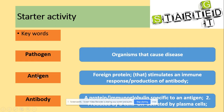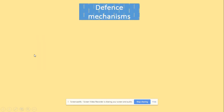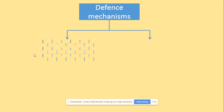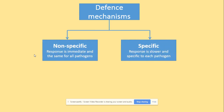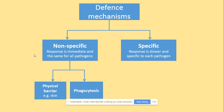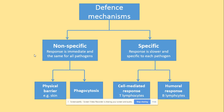What is the relationship between pathogen and antigen? The antigen is found on the surface of the pathogen. Defense mechanisms can be divided into specific and non-specific. Non-specific mechanisms treat all pathogens in the same way — these include physical barriers and phagocytosis. Specific mechanisms are more complicated.